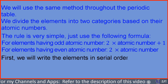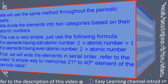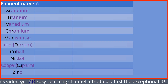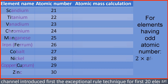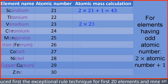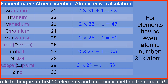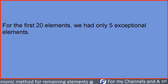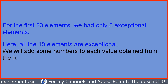First, we will write the elements in serial order — refer to the video 'A simple way to memorize the 21st to 40th elements of the periodic table.' For the first 20 elements, we had only 5 exceptional elements. Here, all 10 elements are exceptional. We will add some numbers to each value obtained from the formula to get the final atomic mass.